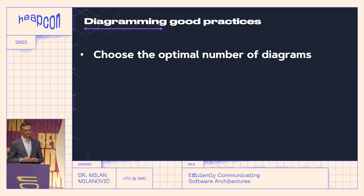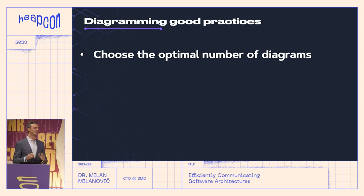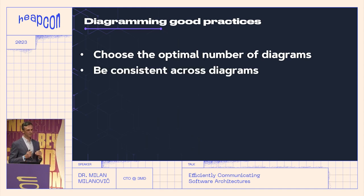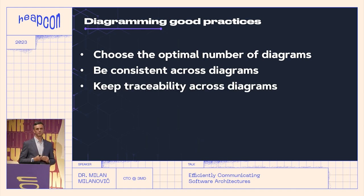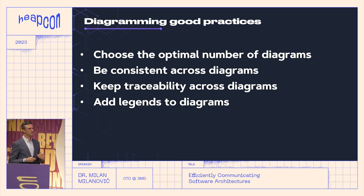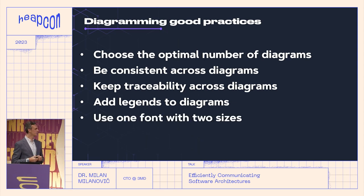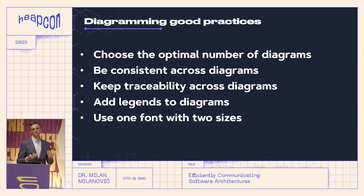What are some diagramming good practices? Choose the optimal number of diagrams — you cannot have a complex system with one diagram, or a simple system with a lot of diagrams. Use common sense. Be consistent across diagrams, especially if you use non-standard notations — if you use arrow shapes and boxes with certain semantics in one diagram, use them also in others. Then we want traceability in your source control systems to see changes and history of changes of your diagram. It is nice to have legends. And try to be simple — one font with two sizes and just straight lines, because the simpler it is, the easier to read and comprehend.